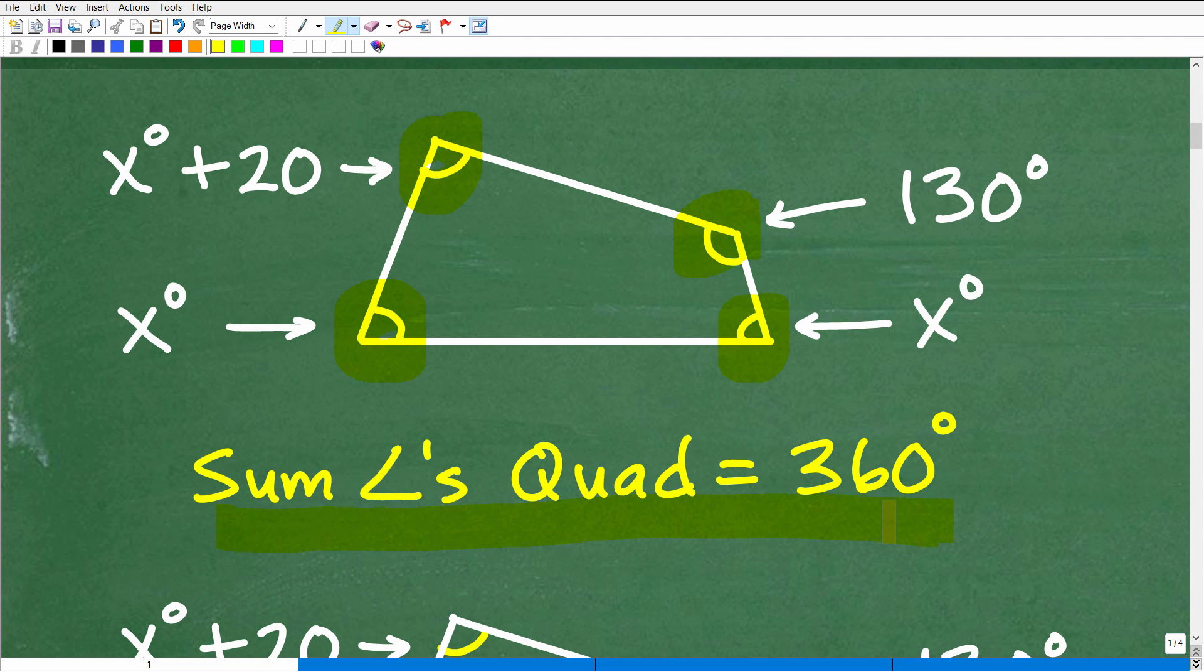And once you know that, then basically what we can do here is set up a simple equation. You're going to have to use some basic algebra. Matter of fact, I'll tell you what to do to get the answer if you want to try this on your own. But basically, you need to take this, add it to this. We have to add up all these angles.